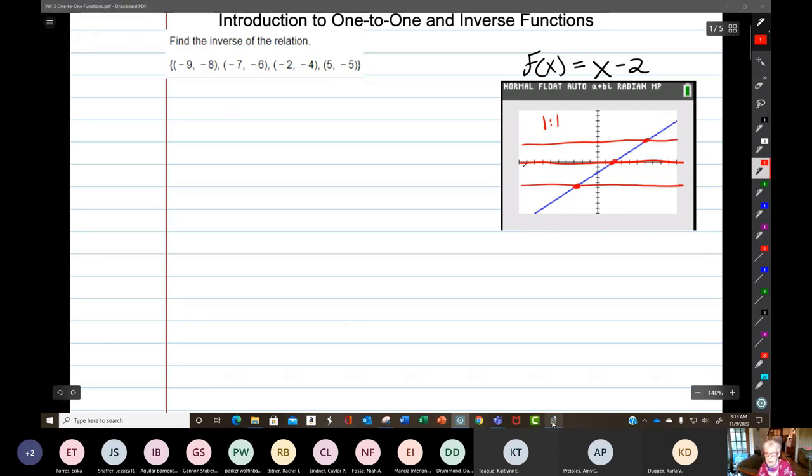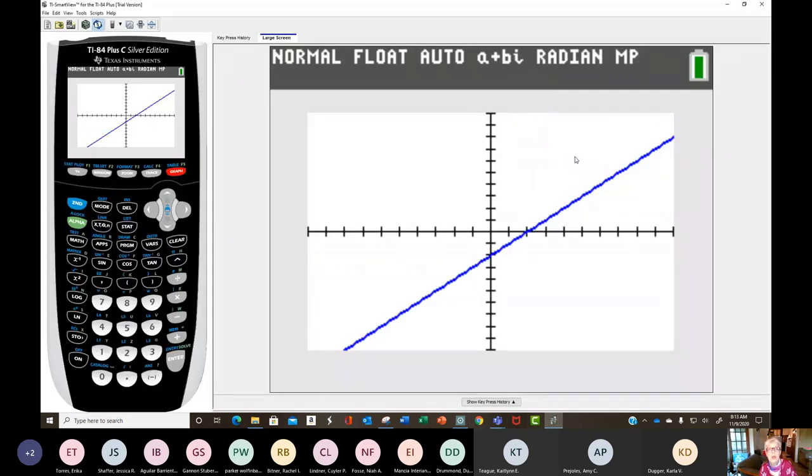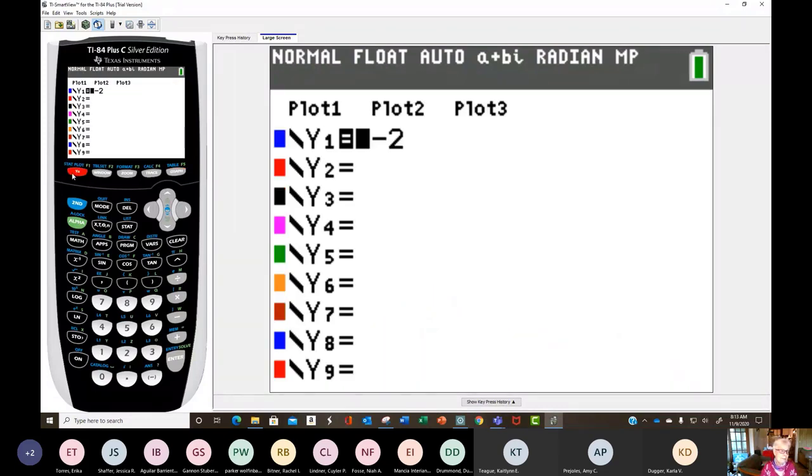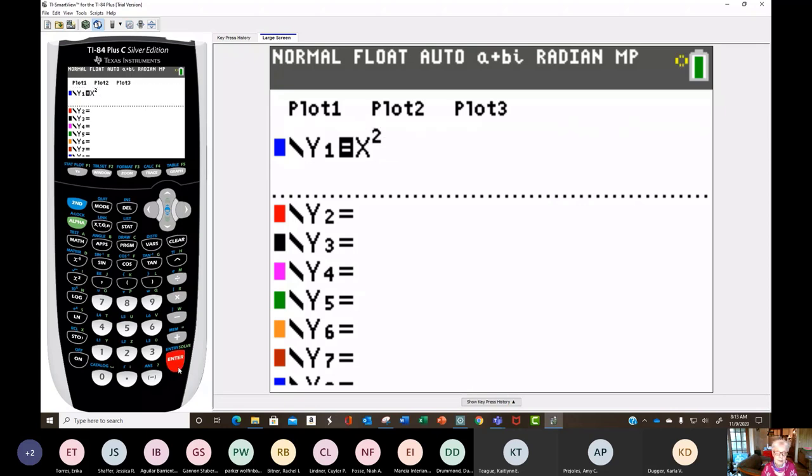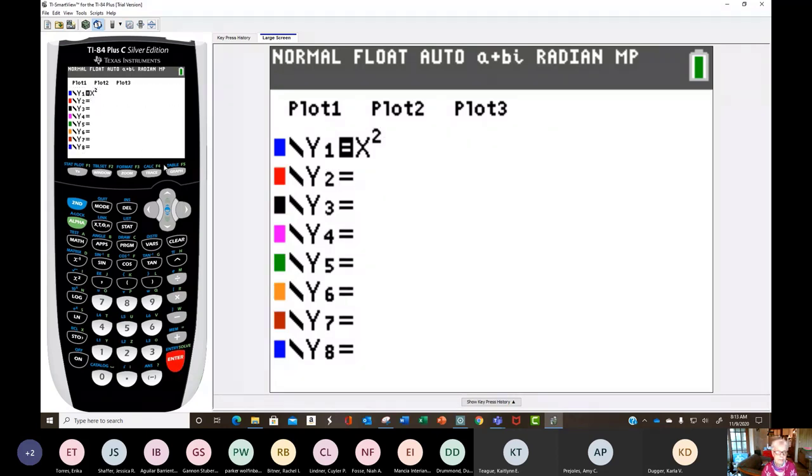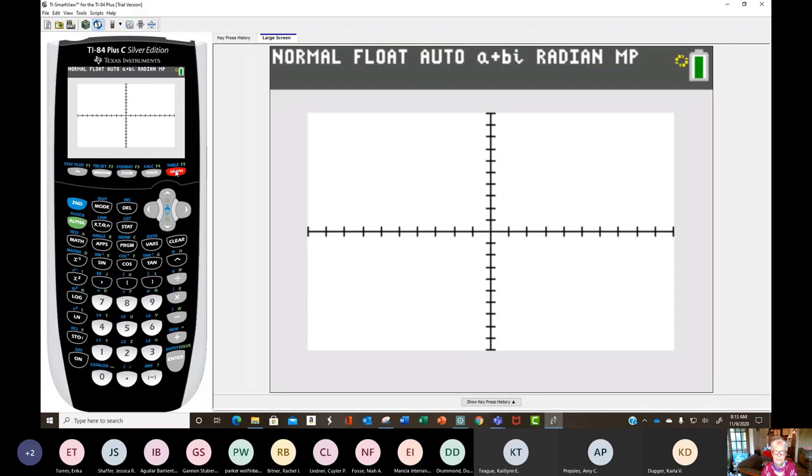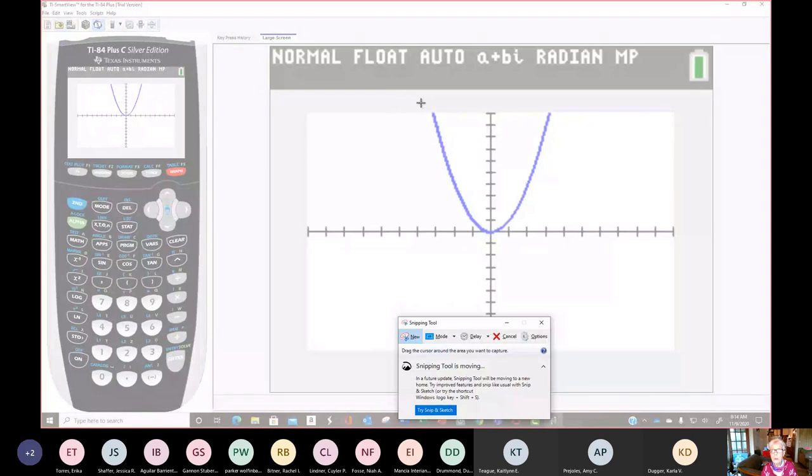Now, I'm going to graph a function that we know and love very well. How about y equals x squared? There it is. We're going to see if this is a one-to-one function. We know it's a function, but is it one-to-one?